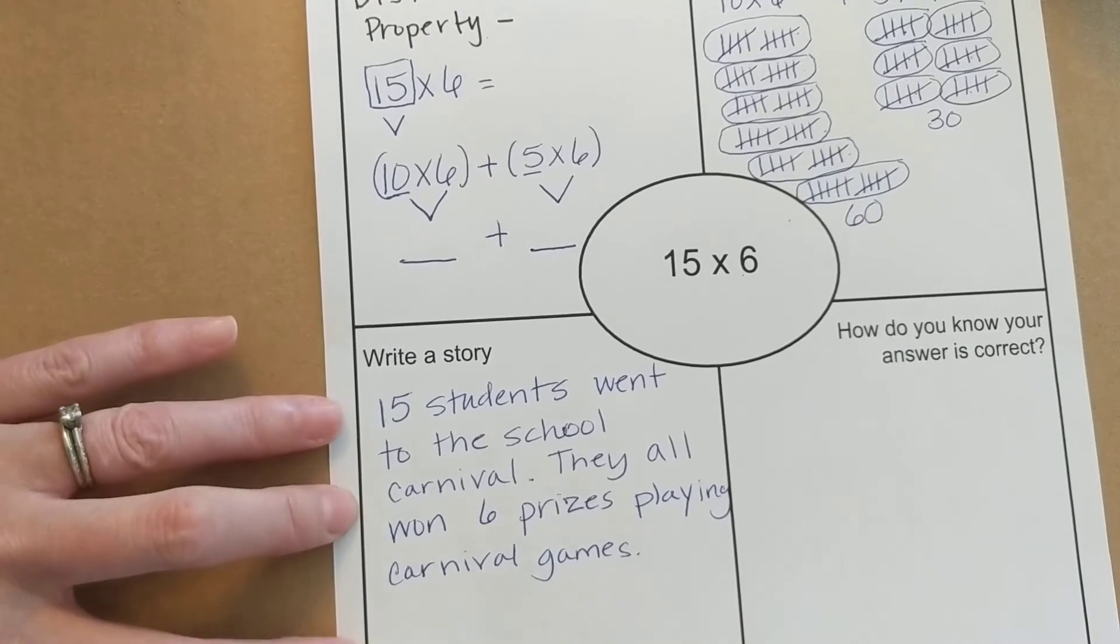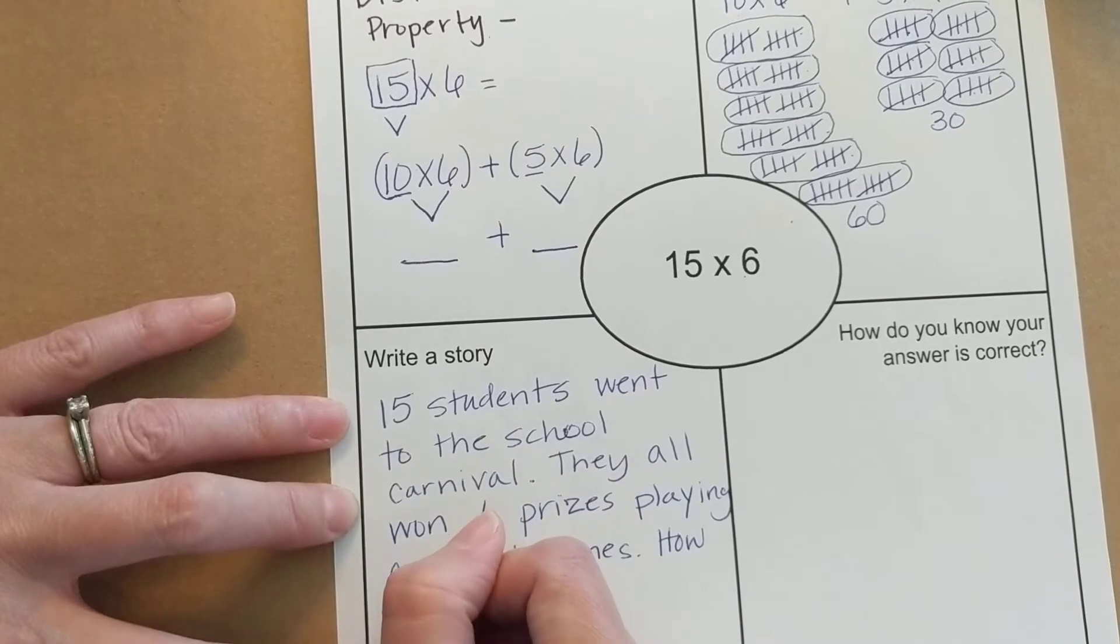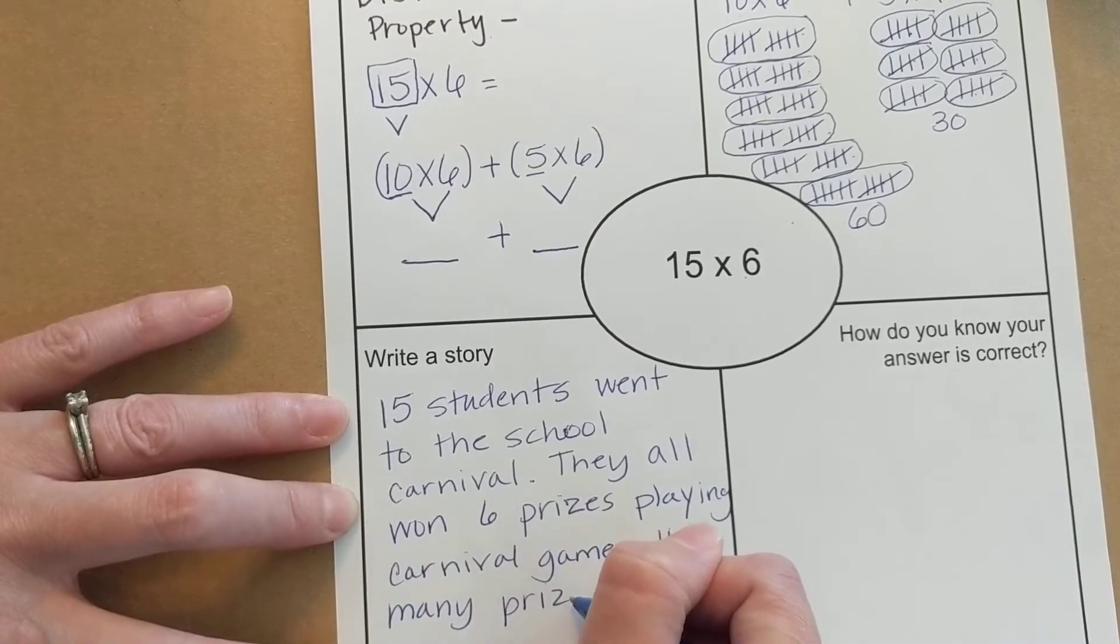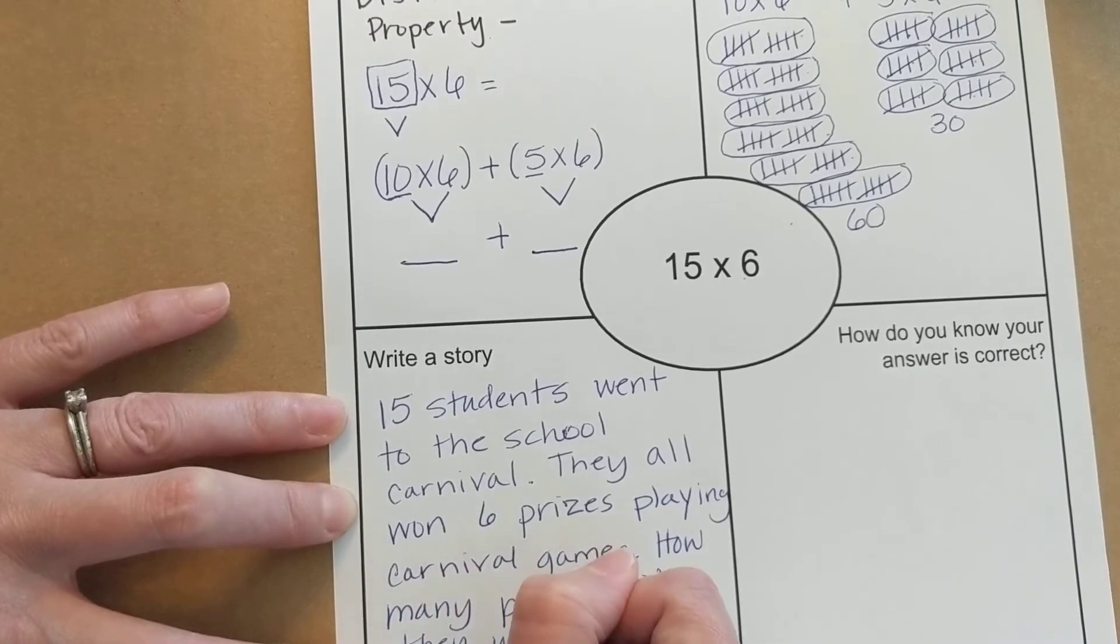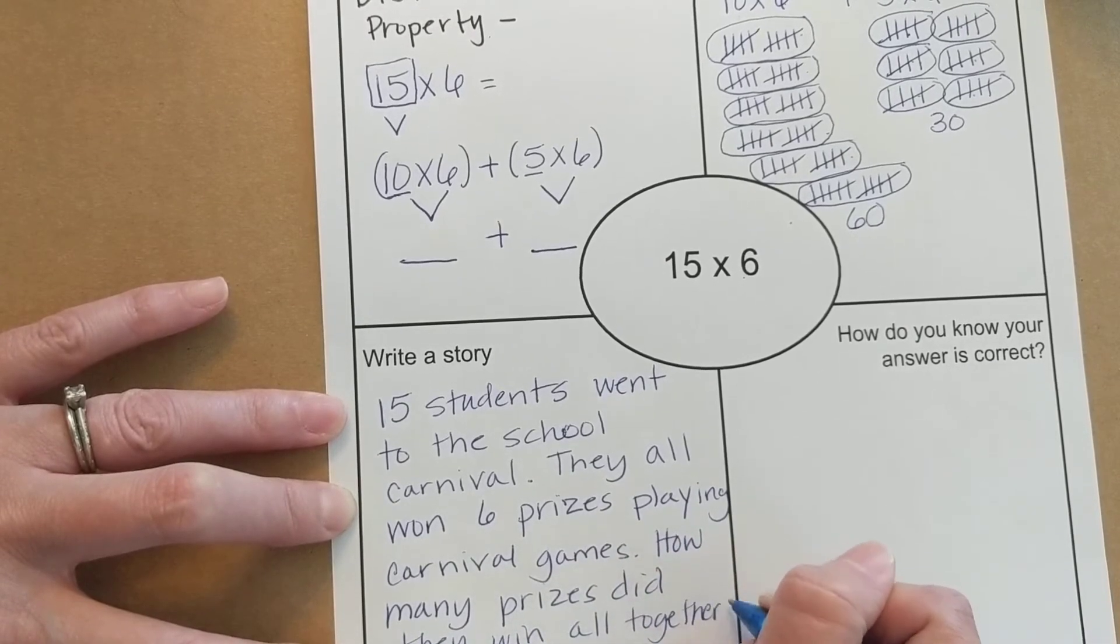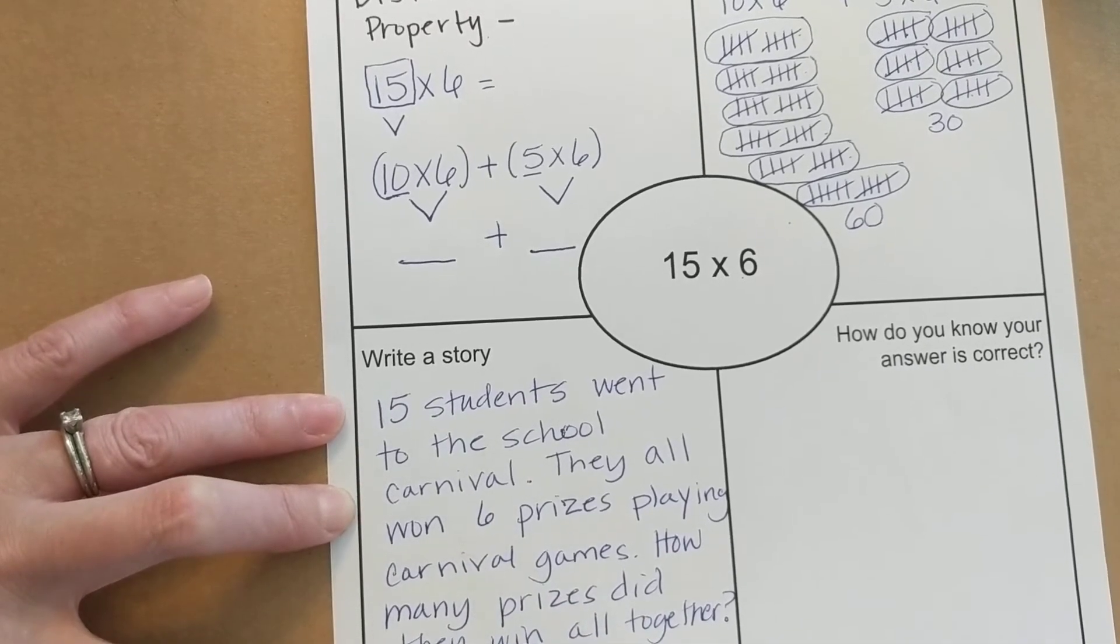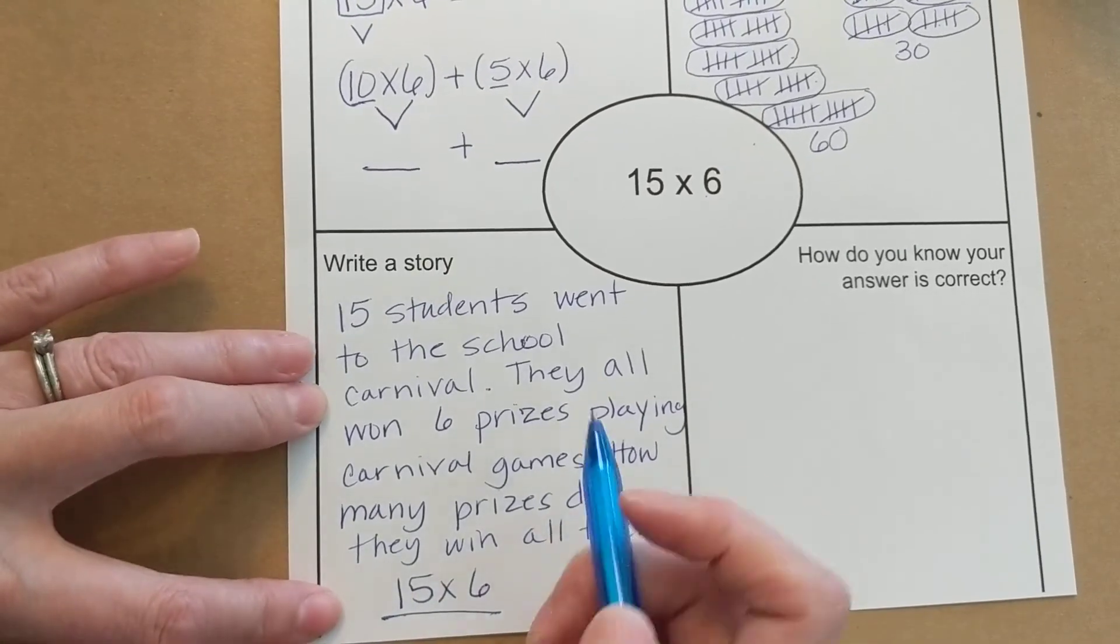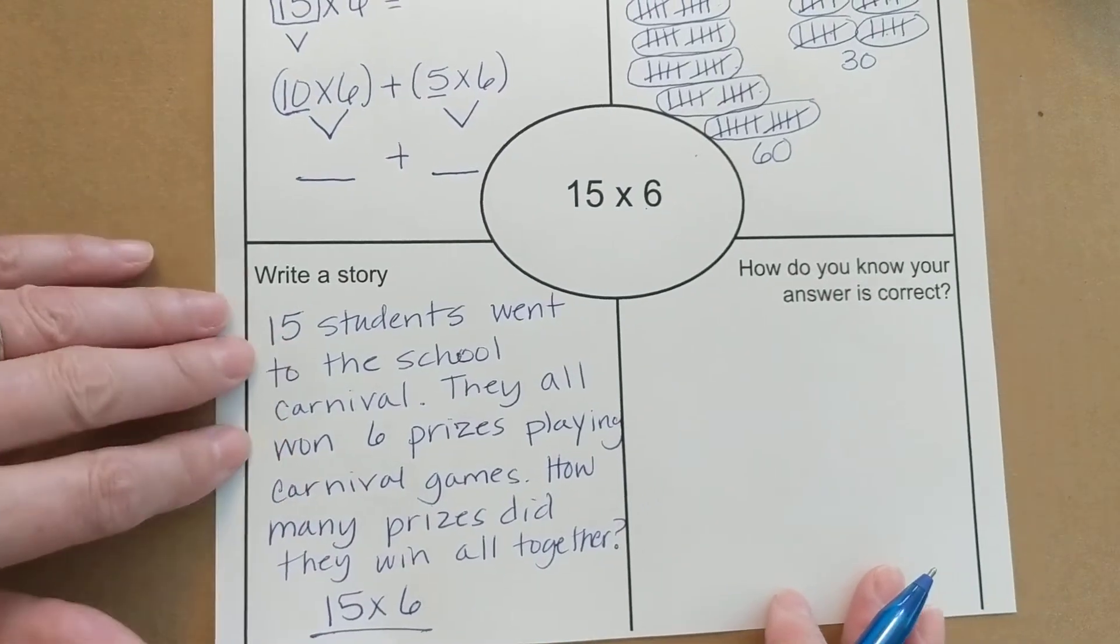So then my question would be how many prizes did they win all together. So I want you to think of a word problem and of course this would be 15 students times 6 prizes each and that would be what our answer turns out to be when we multiply 15 times 6.